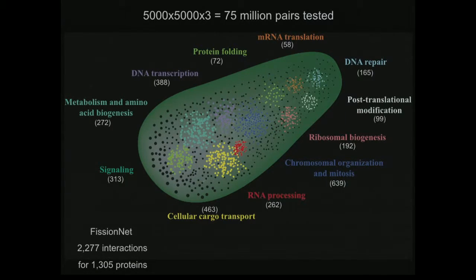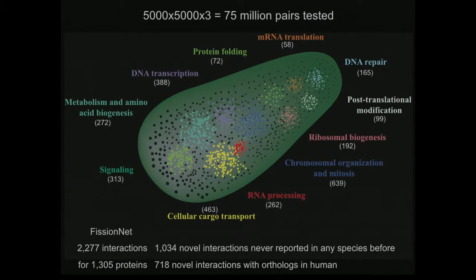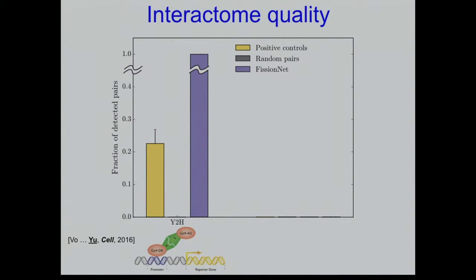The network covers a wide range of cellular processes, about half of it is novel and never reported in any other species before, and 700 of those novel interactions involve orthologs in humans, telling us about human biology. On quality, the way we assess it is by testing a large positive control set and large random pairs as a negative control set. Our version of Y2H does not suffer from a high false positive rate at all — we detected none from random pairs.